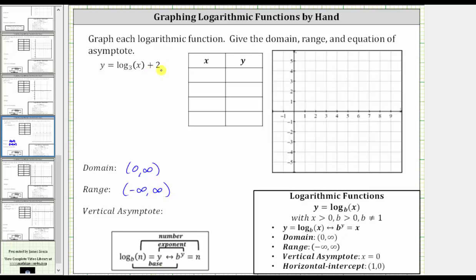Because the graph is shifted up, not left or right, the vertical asymptote is also x equals zero.